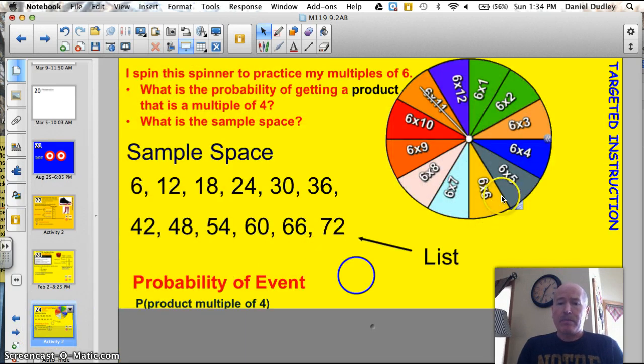So here's the spinner here. I spin the spinner to practice my multiples of six. What is the probability of getting a product that is a multiple of four? And what is the sample space? Well, this one's a pretty straightforward one. I know exactly how many different possibilities I'm going to have, because it's the spinner. So, I just used a list here. So, I listed all the different products out. Six times one, six times two, six times three, and so on.